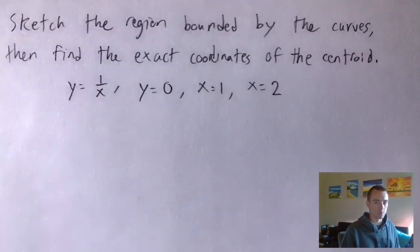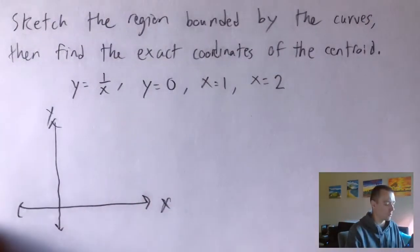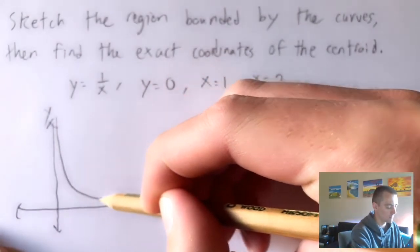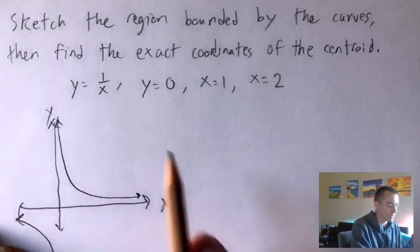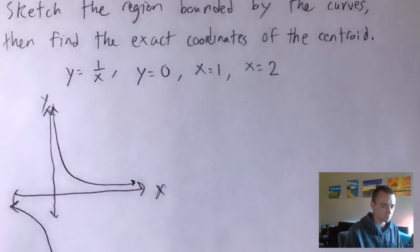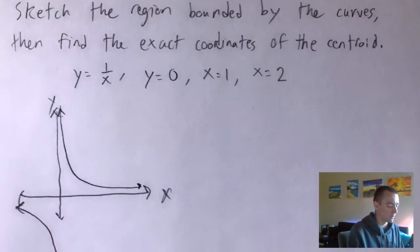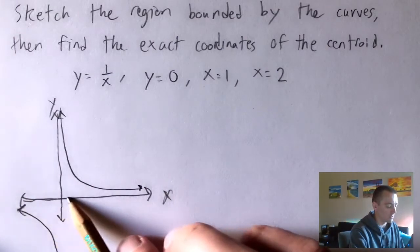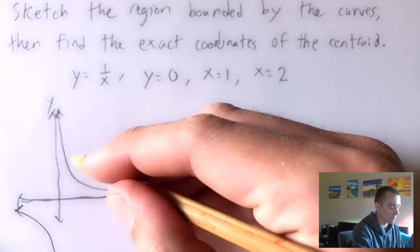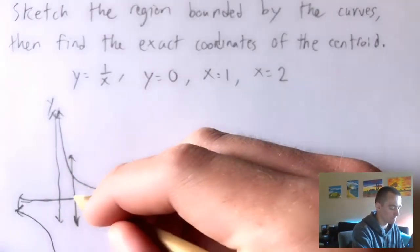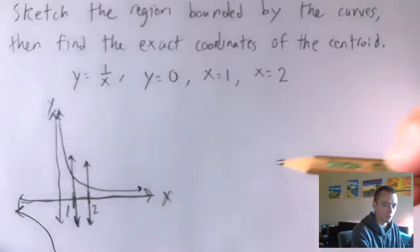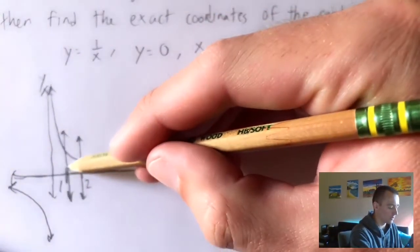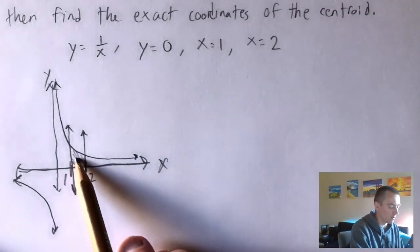First, we'll go ahead and jump into this problem by sketching the region bounded by these curves. So let's start with our xy axis. 1 over x is going to look something like this — we're going to have a horizontal and a vertical asymptote. Since all the rest of these are in the first quadrant, positive x and y, we don't need to worry about the piece in the other quadrant. Y equals 0 is just the x-axis. X equals 1 is a vertical line at x equals 1, and x equals 2 is a vertical line at x equals 2. So you can see the region trapped between all these functions, and our centroid is going to be somewhere within this little area.